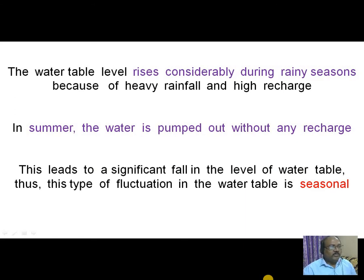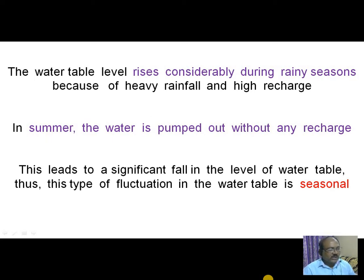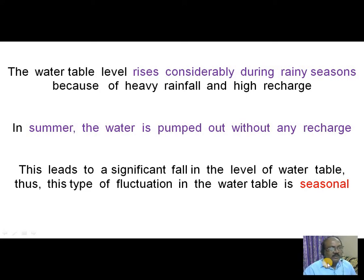Water table level rises during rainy season because of heavy rainfall and high recharge conditions. Whereas in summer, the water is continuously pumped out without any recharge. So, due to this, a significant fall in the level of water table is noticed, and this type of fluctuation is called seasonal fluctuation, because rainy season and summer are the two seasons in which the water table level rises and falls.